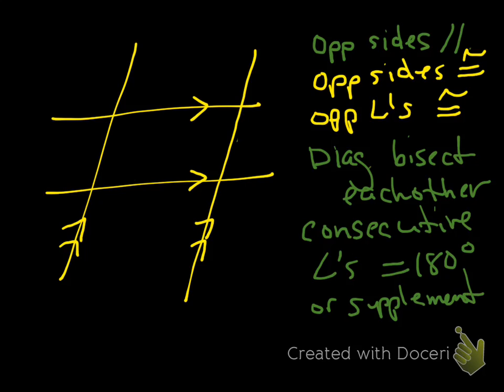So these are the big things to remember: opposite sides are parallel, opposite sides are congruent, opposite angles are congruent, the diagonals bisect each other, and consecutive angles are equal to 180°. I'm going to do a few questions just to verify that you guys got it.